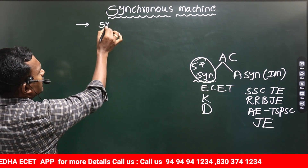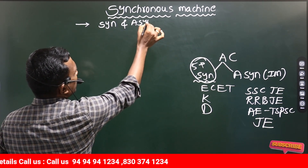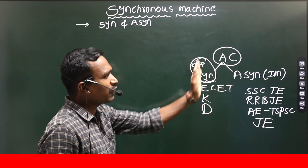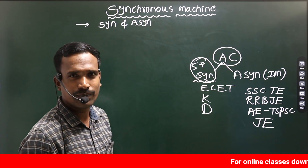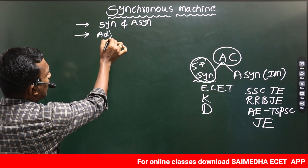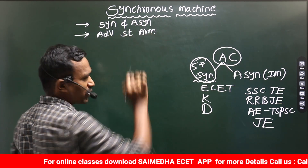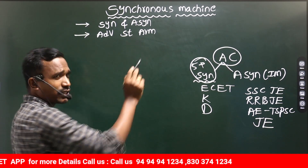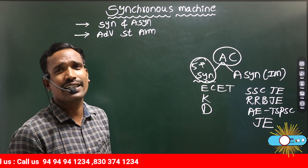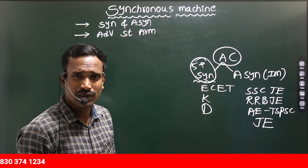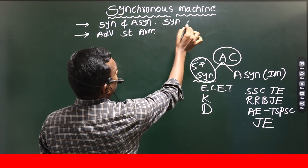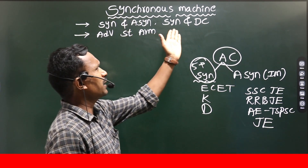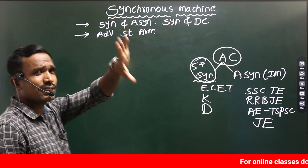First of all, what are the differences between the Synchronous Machine and Asynchronous Machine? We need to know that. Actually we have only one topic which is AC Machines, divided into two parts. Then, what are the advantages of stationary armature in our Synchronous Machine? Compared to DC Machine, in our Synchronous Machine the stationary armature is very important. We can also go for differences between Synchronous Machine and DC Machine for clarity.